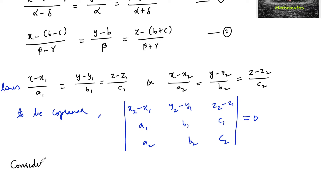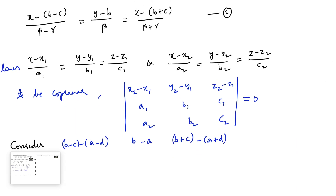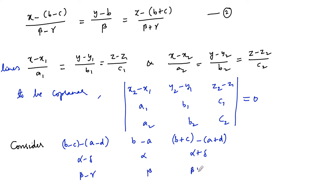Now we identify the values: x1 is (a minus d), so x2 minus x1 is (b minus c) minus (a minus d). y2 minus y1 is b minus a, and z2 minus z1 is b plus c minus (a plus d). For the direction ratios: a1 is (alpha minus delta), b1 is alpha, c1 is (alpha plus delta), a2 is (beta minus gamma), b2 is beta, and c2 is (beta plus gamma). Let us now evaluate this determinant and prove it equals zero.